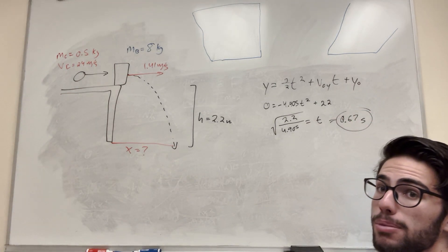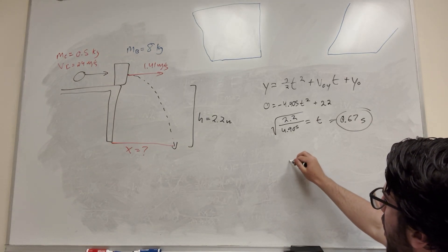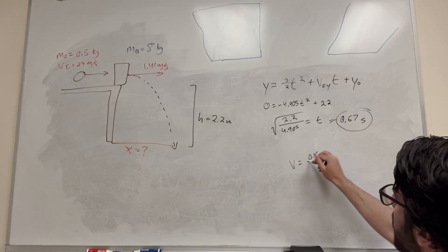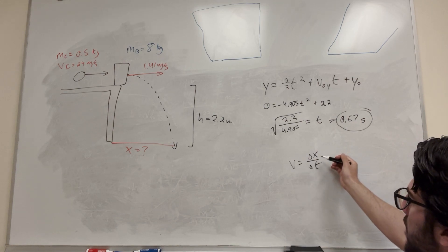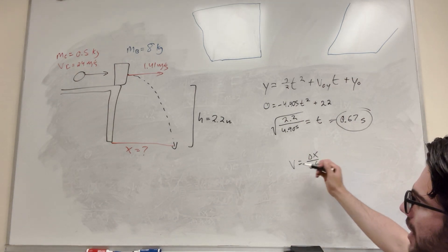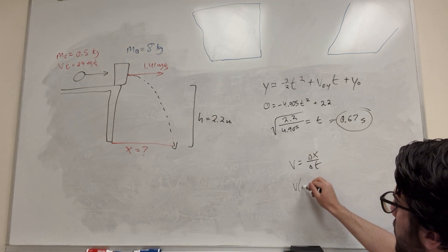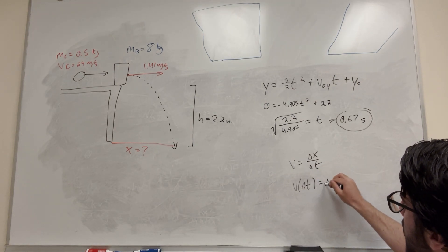And we're trying to figure out how far it moves in that much time. So of course we know that velocity is equal to change in position over change in time. We're trying to find change in position. We know change of time and we know its velocity. So velocity times change in time is equal to change in x.